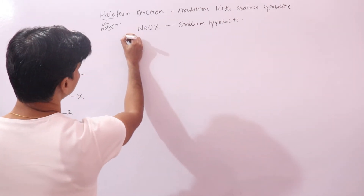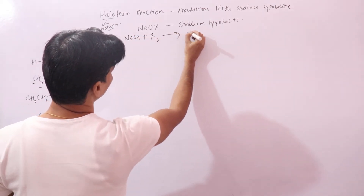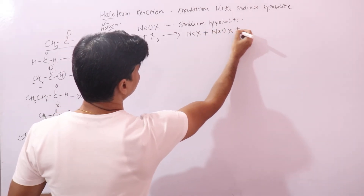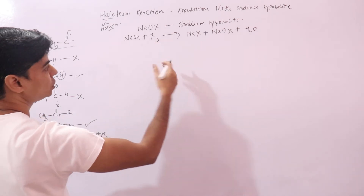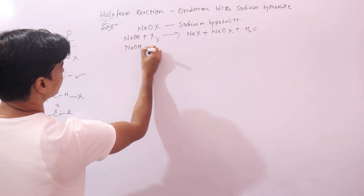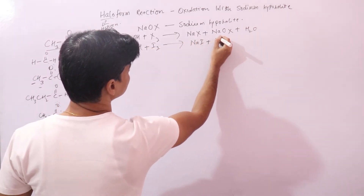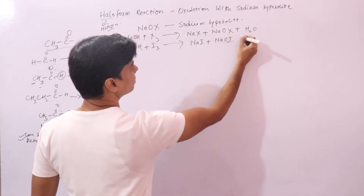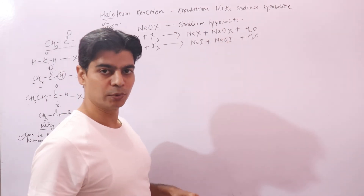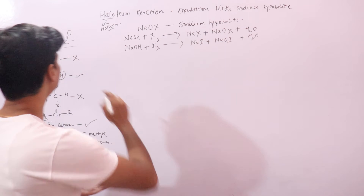Sodium hypohalite is prepared from an alkali and a halogen. For example, sodium hydroxide treated with iodine gives sodium iodide plus sodium hypoiodite plus water. This sodium hypoiodite will then oxidize the aldehyde or ketone that contains the CH3CO group.